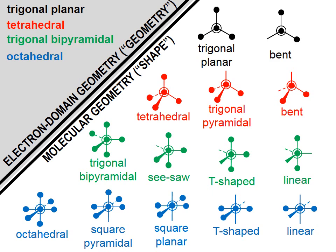A trigonal bipyramidal electron domain geometry — shown in green lettering — would result in a trigonal bipyramidal molecular geometry, a seesaw shape, a T-shaped, or linear. The central atom is set apart with an extra circle. An octahedral electron domain geometry has several possible shapes, shown at the bottom of the screen.